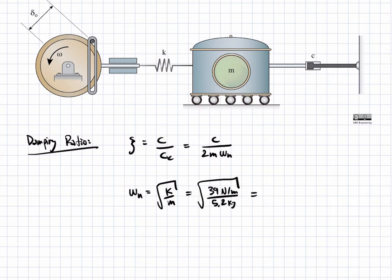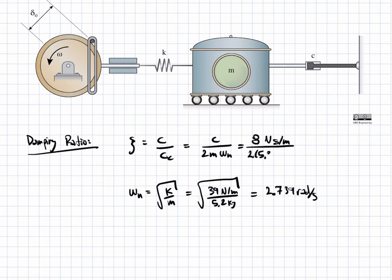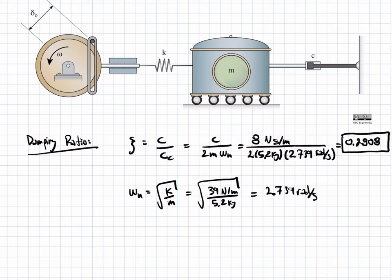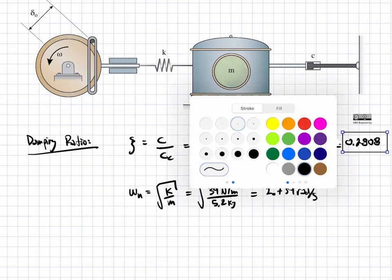The natural frequency equals 2.739 radians per second. Plugging this into the damping ratio equation, C equals 8 newton-seconds per meter divided by 2 times 5.2 kilograms times 2.739 radians per second. This gives a damping ratio of 0.2808. This is the first part of our final answer.